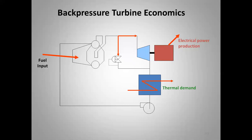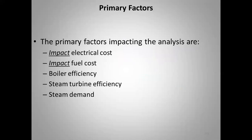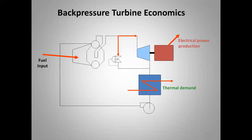Back pressure turbine economics: two paths exist. Going through the PRV means no electricity generation — you satisfy the thermal demand but must purchase all electricity from the utility. Going through the backpressure turbine generates electricity. You need slightly more steam since energy is extracted for power generation, but you can still use most of the turbine exhaust energy for the thermal demand — that's where the economics become really good.